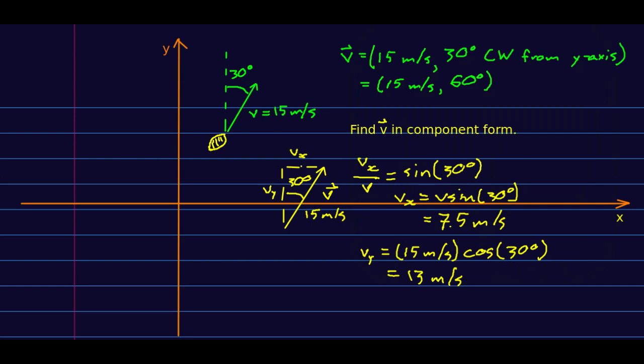So to go from magnitude direction to component form, just draw the triangle and do the trig.